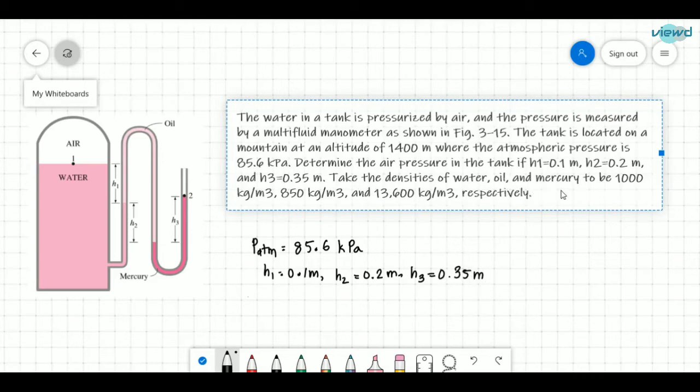Take the densities of water, oil, and mercury to be: density of water is equal to 1000 kg per meter cube and the density of oil is 850 kg per meter cube. Density of mercury is 13,600 kg per meter cube.